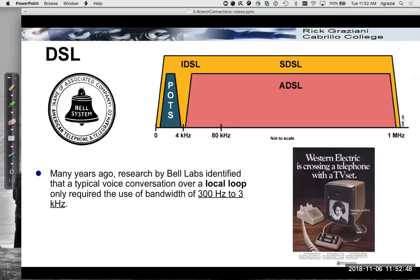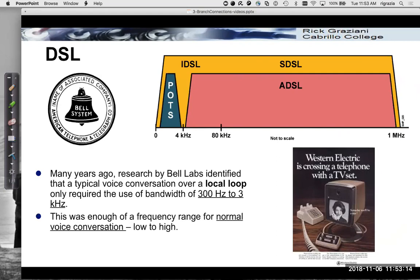Now looking at DSL — digital subscriber line. Many years ago, Bell Labs identified that a typical voice conversation over a local loop — the copper line that goes from your house to the central office — required a bandwidth of only 300 Hz to 3 kHz. This frequency range was enough to carry a normal voice conversation.